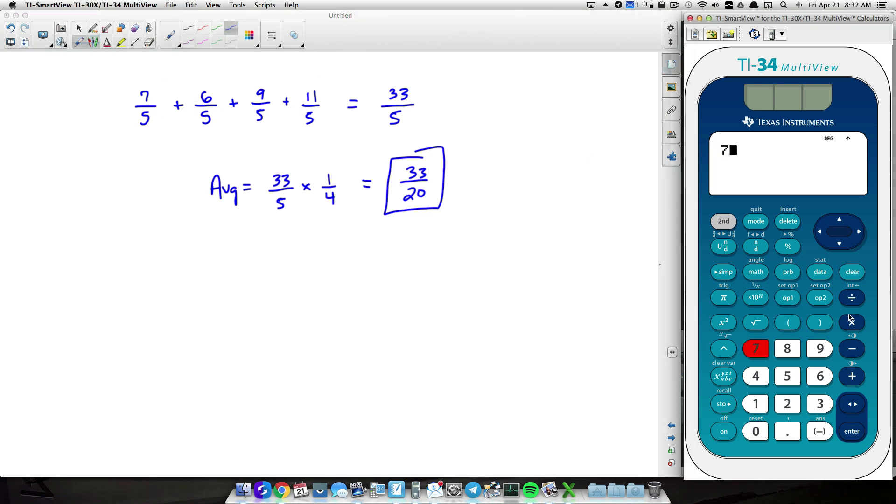And then something else too. I'm just going to do this very quickly. 7 divided by 5, that's the same thing as 7 fifths. I'm just going to add it up like this. Plus 6 over 5, plus 9 over 5. Order of operations will take care of all this. And then 11 over 5. So adding up all those things, it's going to give us a decimal here. 6.6, I can convert that to a fraction real quick.